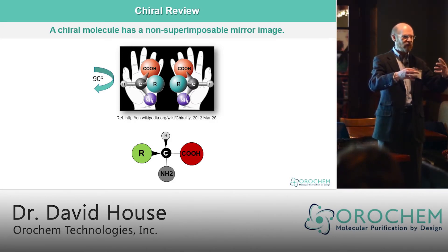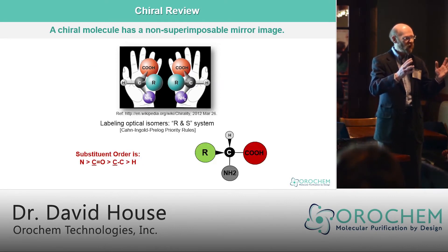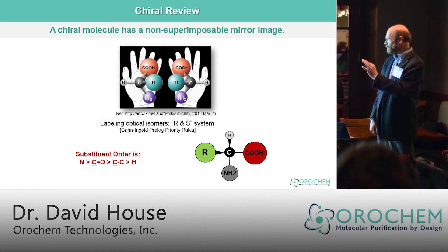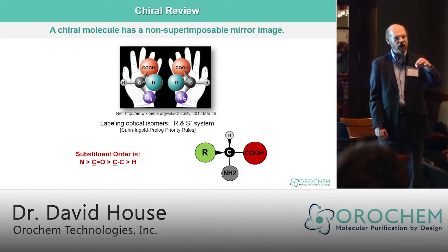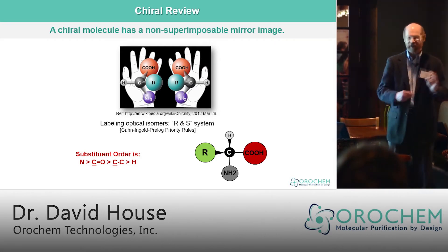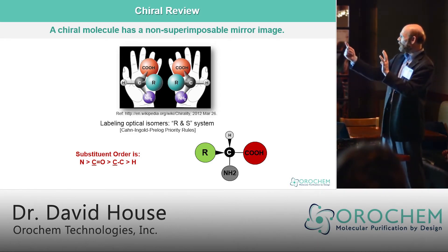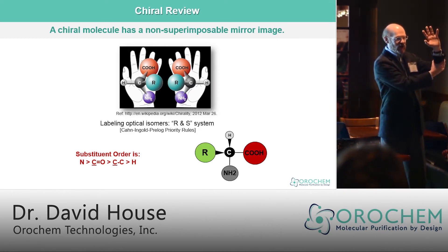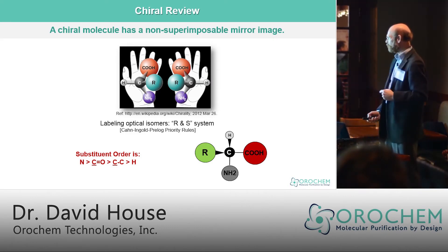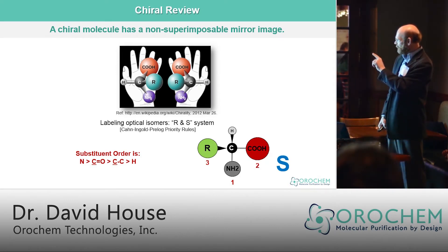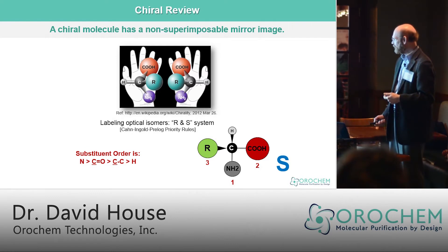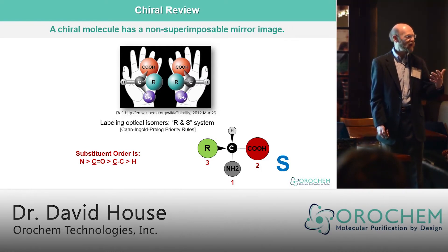The R group represents the bulk of the amino acid — this could be a ring, another carbon with an aromatic ring — generally it's the bulkiest part of the molecule. Looking at that molecule, the substituent order is nitrogen before the carbon attached to a double bond, which is before a carbon attached to a carbon bond, which is before the proton. The proton is the lowest, so it goes in the back. We rotate the molecule so the R group goes 90 degrees, and looking at the molecule in the bottom right, the order would be amino, the acid, and then the R group. That's counterclockwise, which would be defined as S — the S enantiomer or S optical isomer.